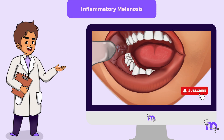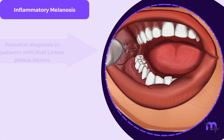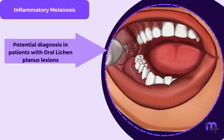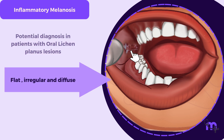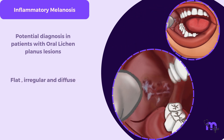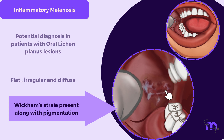Moving on to inflammatory melanosis, it is a potential diagnosis in patients who also have oral lichen planus lesions. These lesions are flat, irregular, and diffuse. The characteristic appearance of lichen planus, including Wickham striae, will be present alongside the pigmentation.